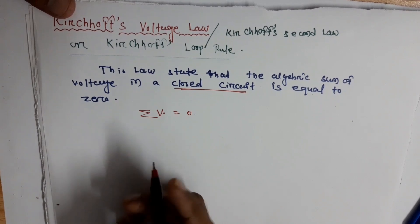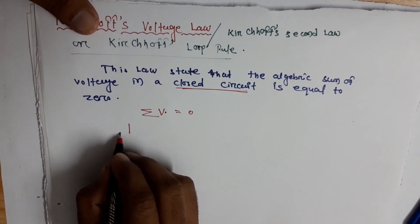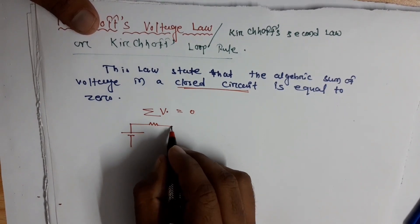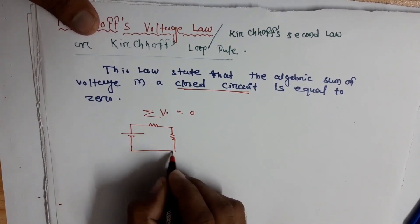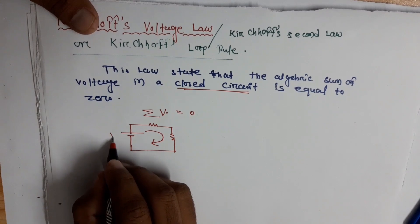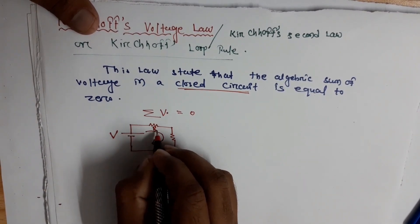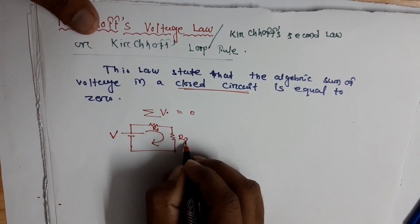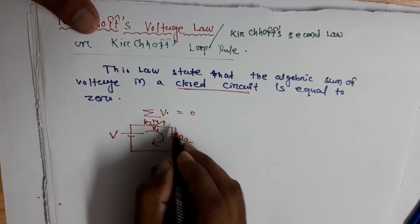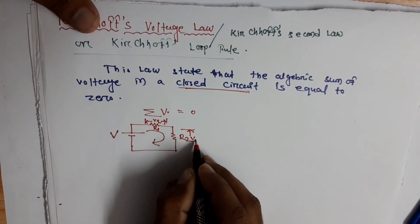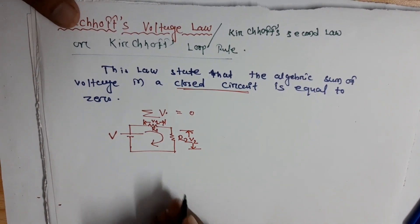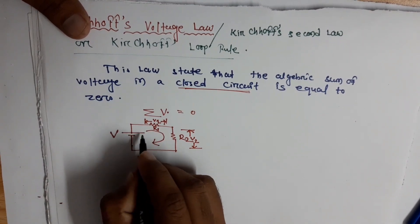First, let's understand what we mean by a closed circuit. If a current starts from a positive terminal, goes through different elements, and then returns to that terminal, it is called a closed path. Here we take the source as V, and this is a load R1 and R2. Here some voltage drop — this is called V1 and this is V2.